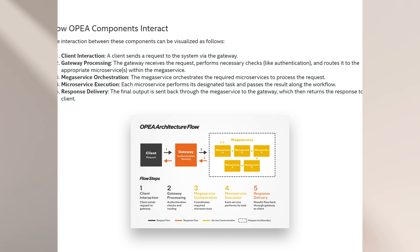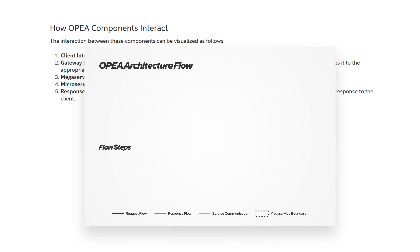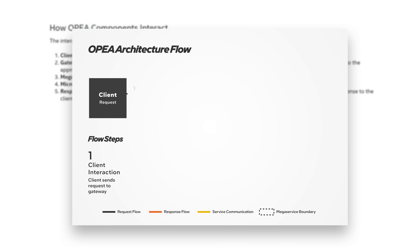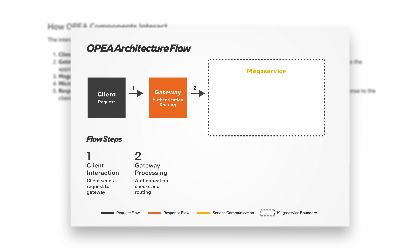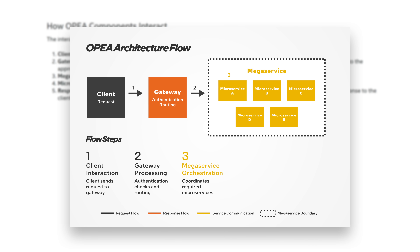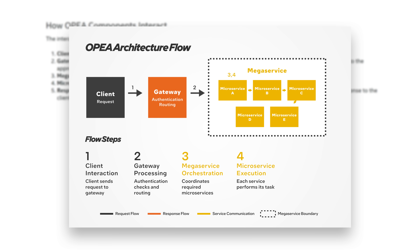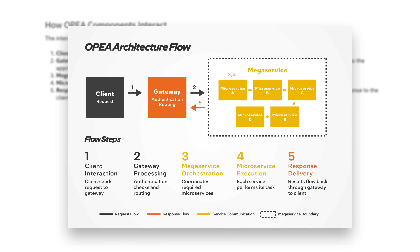Here is a sample workflow showing the interaction between these components. The client sends in a request; the Gateway authenticates and routes the request to appropriate microservices; the mega-service follows its blueprint to orchestrate the microservices; microservices execute their defined tasks; and the final response is sent back to the client through the Gateway.